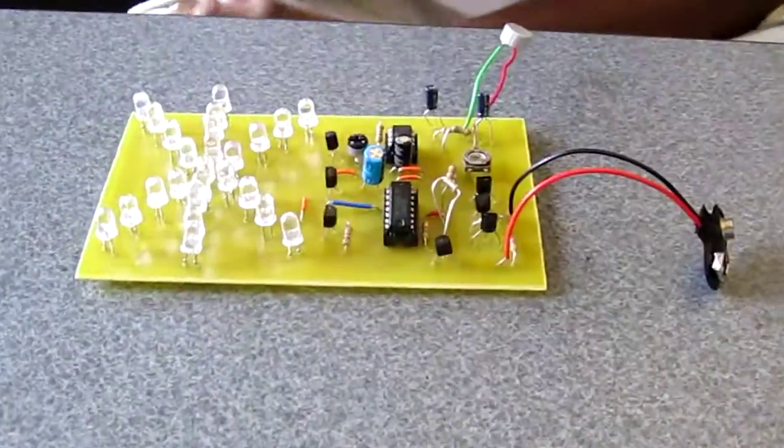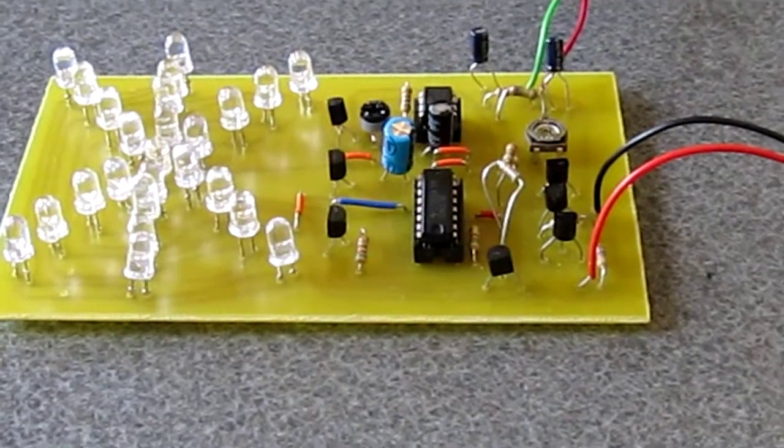These little black things here are transistors, and they control the functions of the circuit.